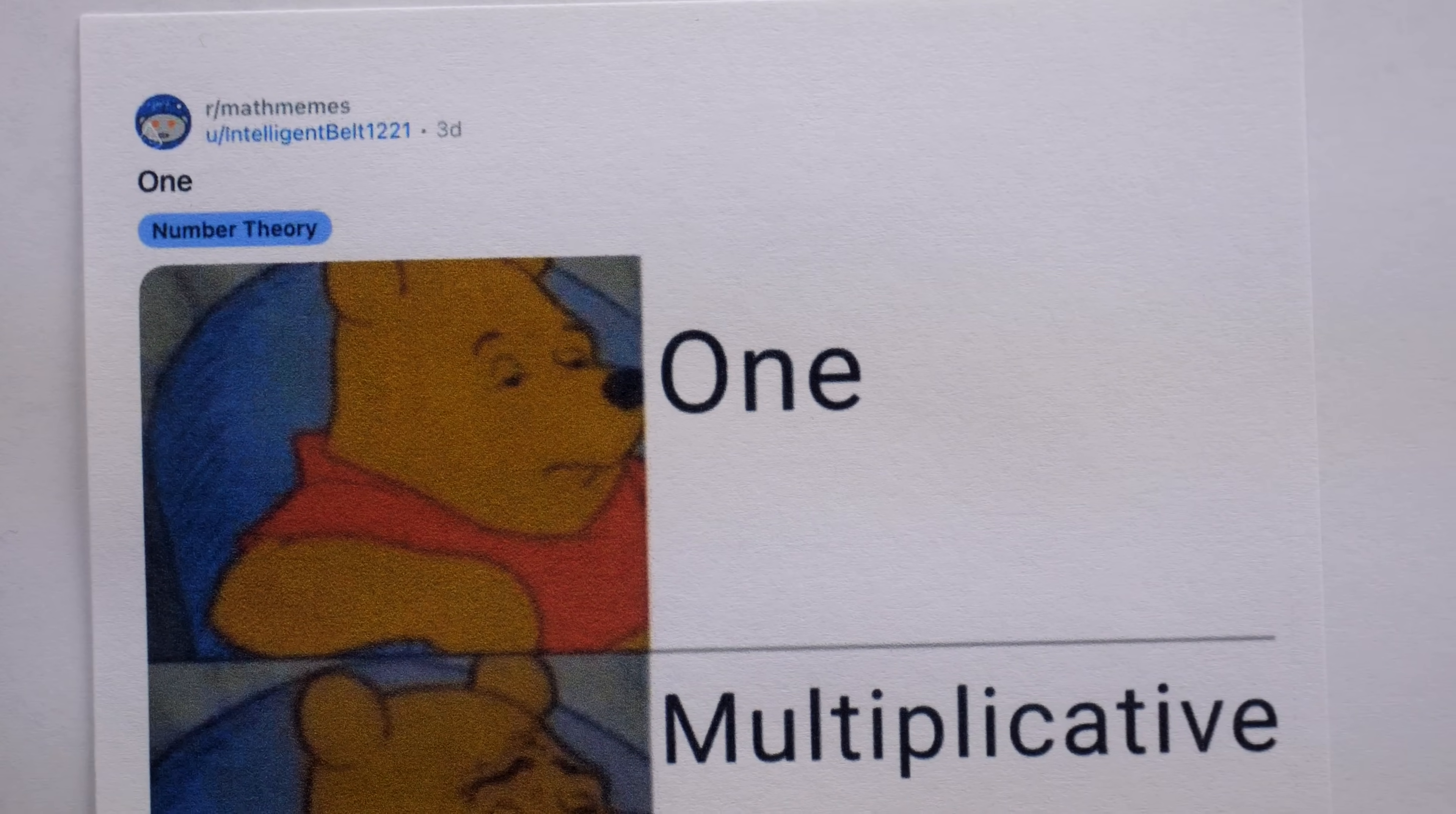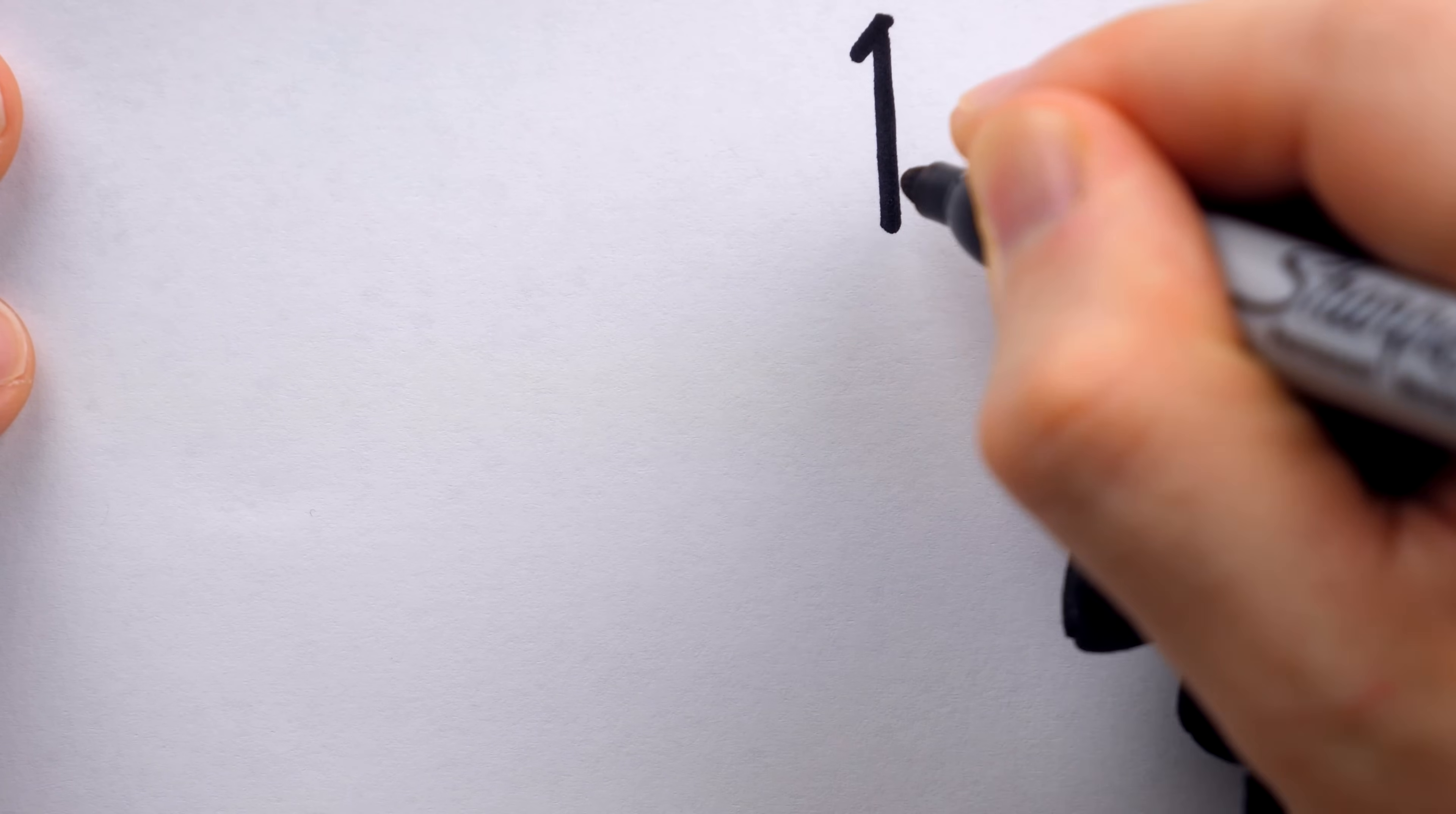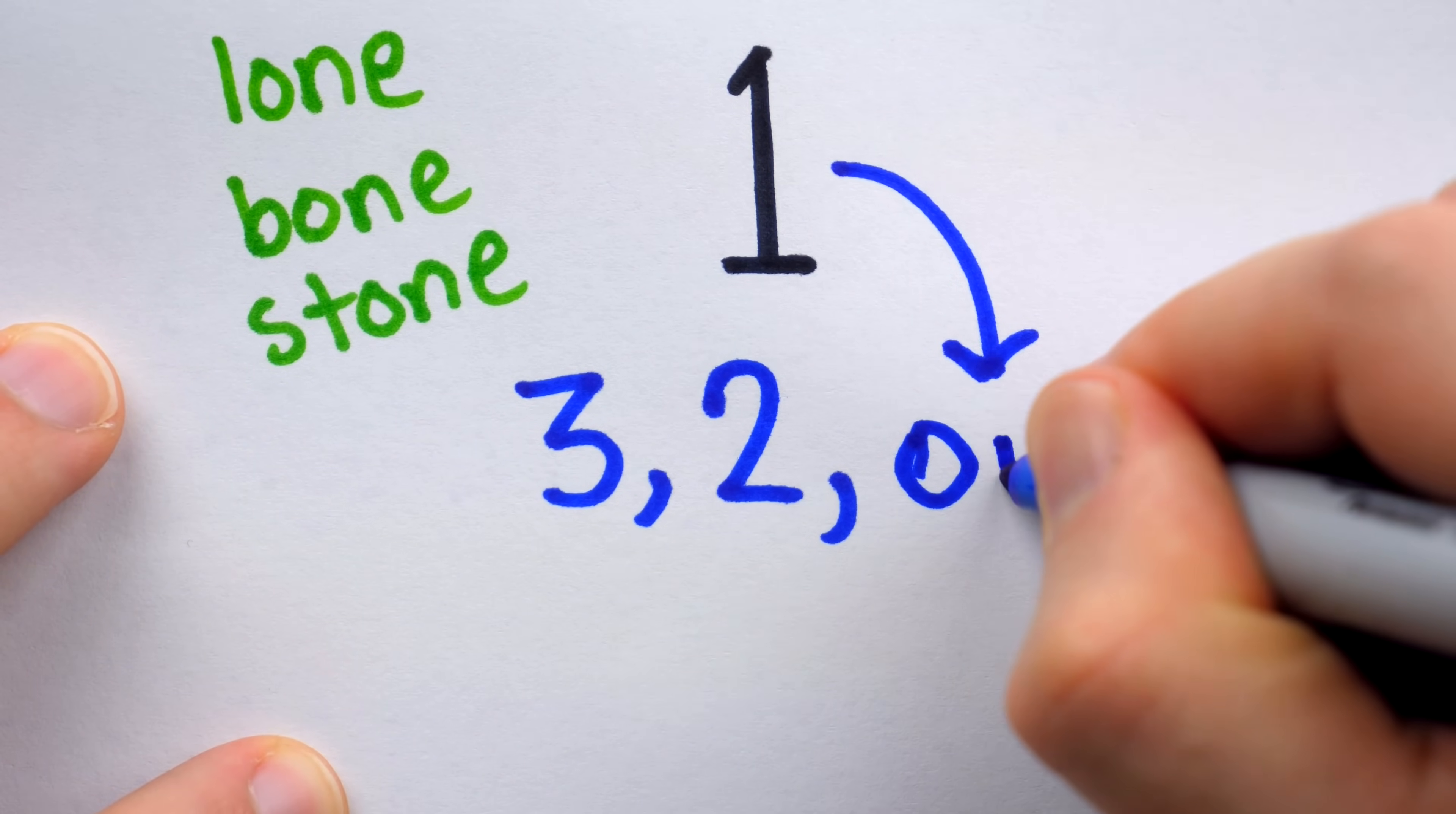Beginning, of course, with the top, the simplest way to refer to the first counting number. It's a single stroke, occasionally with some additional flair, and sometimes called the loneliest number. This number, of course, is one.